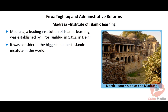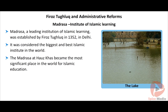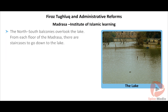It was considered the biggest and best Islamic institute in the world. The Madrasa at Housekaas became the most significant place in the world for Islamic education. The Madrasa was built in L-shape on the edges of a lake. The north-south balconies overlook the lake. From each floor of the Madrasa, there are staircases to go down to the lake.